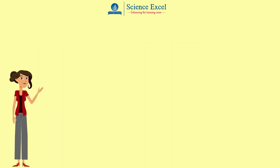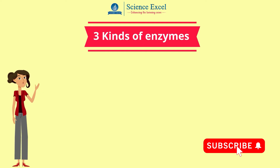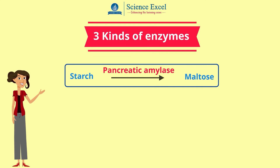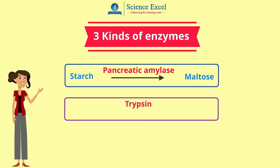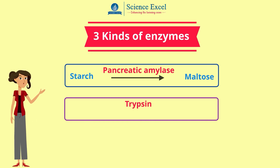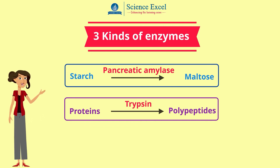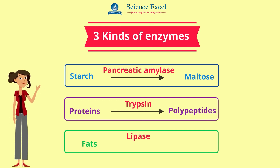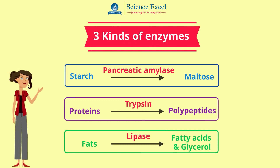The pancreatic juice contains three kinds of enzymes: pancreatic amylase, which breaks down leftover starch into maltose; trypsin, a protease enzyme which breaks down proteins to polypeptides; and lipase, which acts on the emulsified fats to break them down into fatty acids and glycerol.